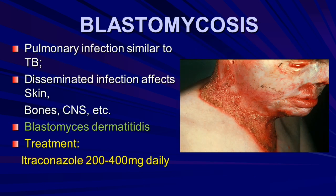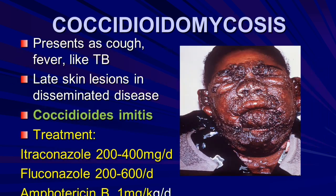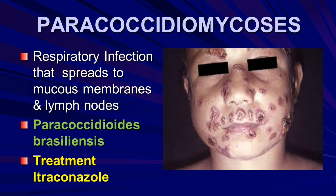Blastomycosis patients present with pulmonary infection similar to TB; bone and sinuses are affected. Coccidioidomycosis: patient with history of cough and fever with disseminated skin lesions; organism is Coccidioides immitis. Treatment is antifungal. Paracoccidioidomycosis picture is also shown.